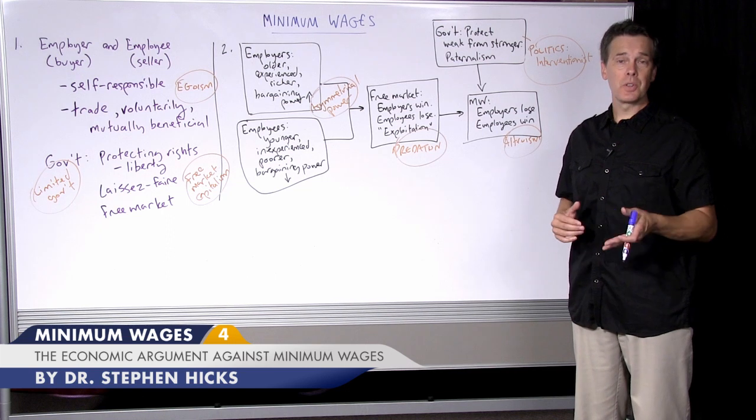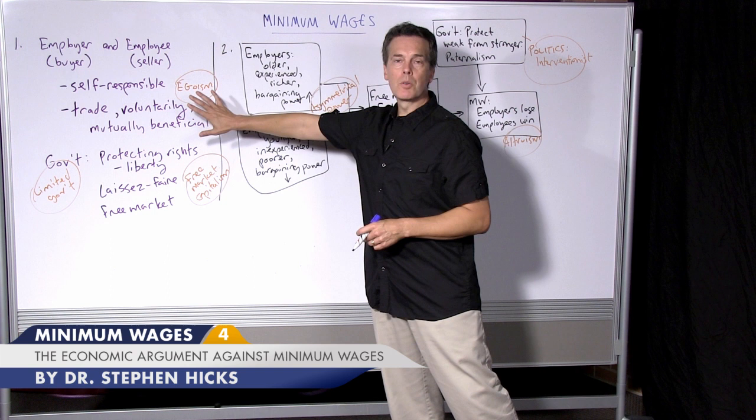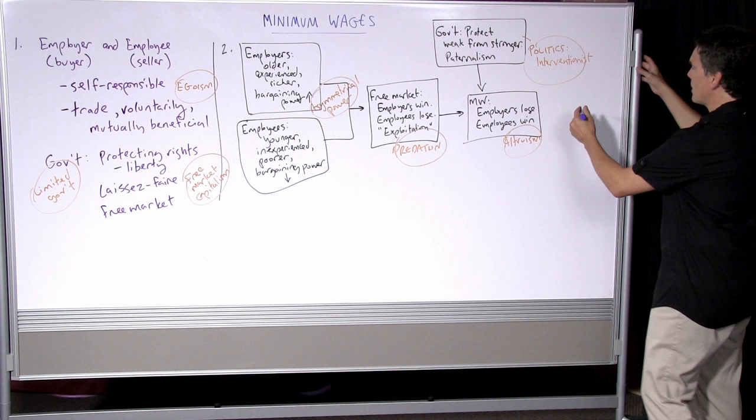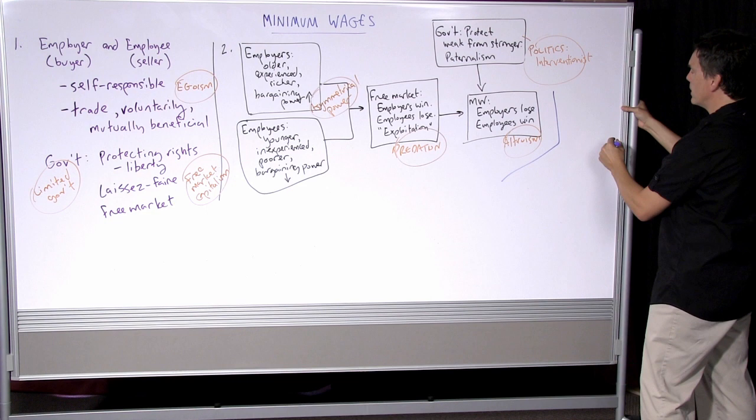Let's turn to the next stage of the argument. We have an initial framing of employer-employee relationship that says there's no need for a minimum wage, a counter-argument that argues that's an unrealistic way of looking at employment and justifying a minimum wage. The next step of the debate is for the first side to criticize the arguments for minimum wage. Let's call that position number three.